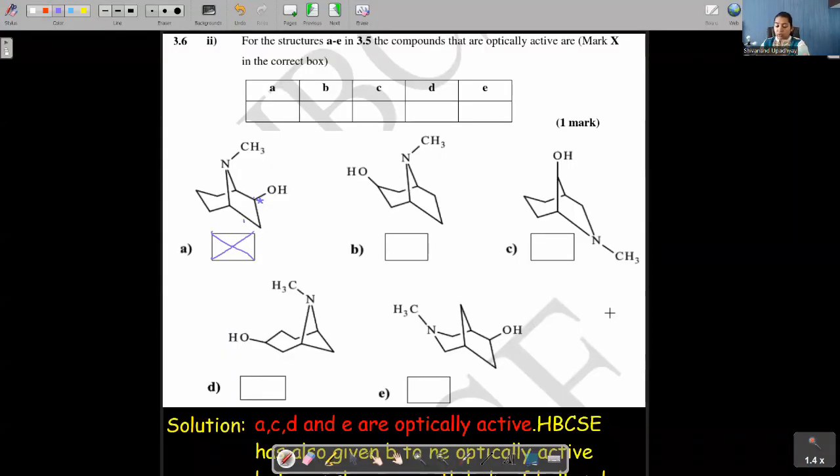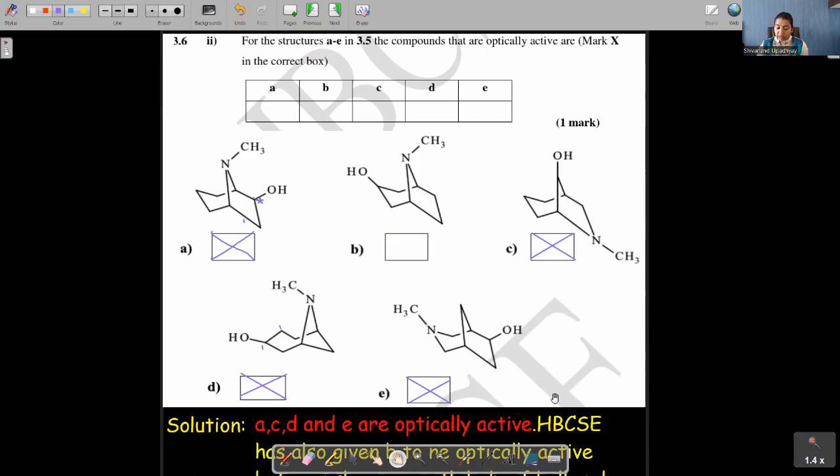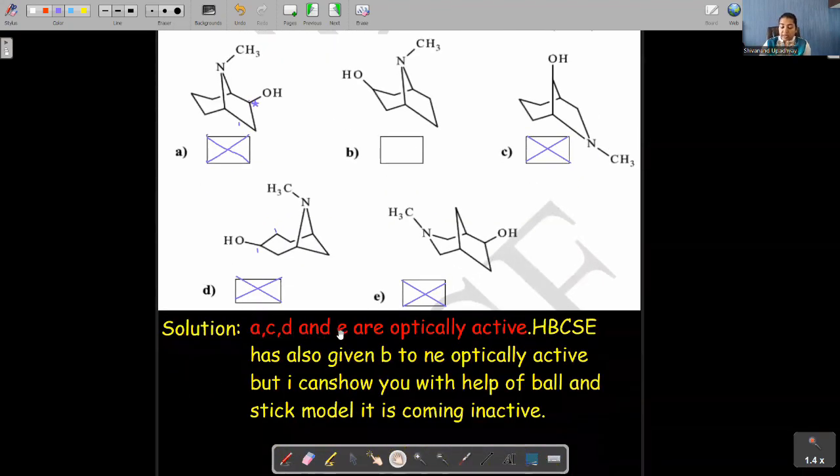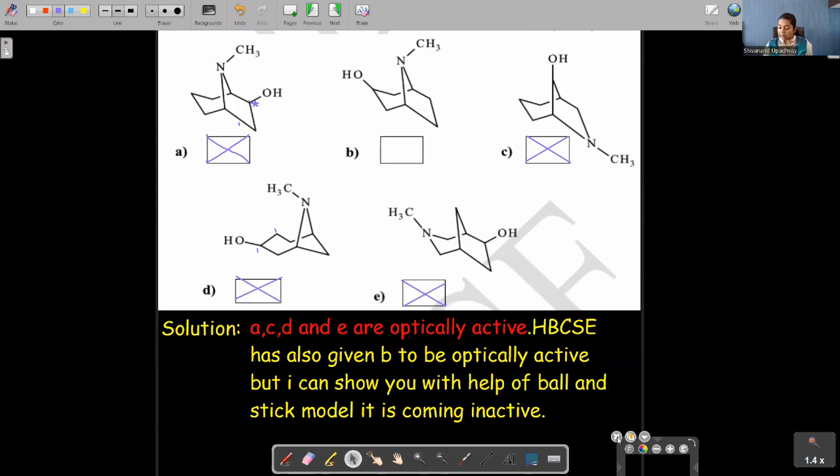So let's continue. So B should not be an answer, but again, C should be an answer because it is very evident like A that it is also having chiral centers. It is not having any plane of symmetry. D is chiral because this center will not have an image this side. Similarly, E is chiral. So answer of this particular question should be A, C, D and E. These are the optically active molecules. HBCSE has also given B to be optically active, but we have just shown that it is not optically active.